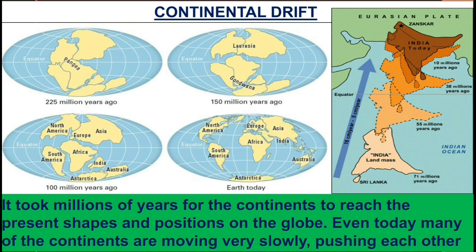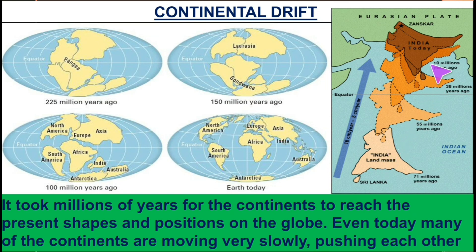This continental drift picture gives a clear idea about how the present shape of India was gained. There was one continent — Pangaea — then it divided into Laurasia and Gondwana, with India's southern portion in Gondwana land. Through continental drift, India slowly moved and finally collided with Asia, forming the youngest folded mountains called the Himalayas.